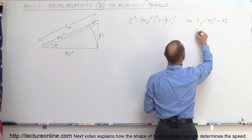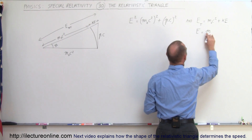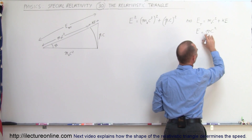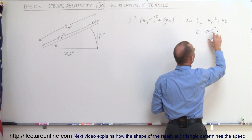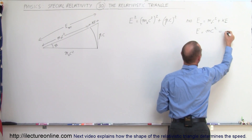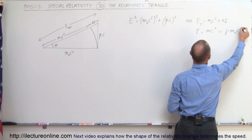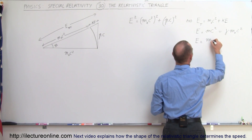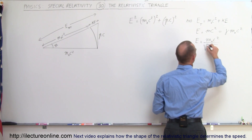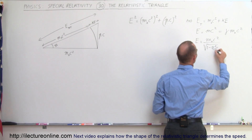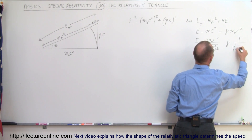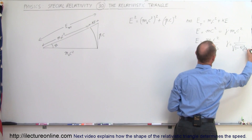Another way of looking at it: E, the total energy, is also equal to the total mass times C squared. Since the total mass can be written as gamma times M, we can write it as gamma times the rest mass times C squared. In other words, the total energy can also be written as the rest mass energy divided by the square root of 1 minus V squared over C squared, because gamma equals 1 divided by the square root of 1 minus V squared over C squared.